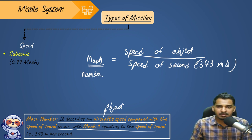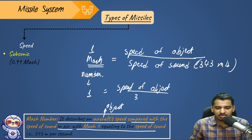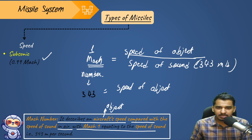If an object has Mach number 1, its speed equals the speed of sound — 343 m/s. So subsonic is classified as Mach number up to 0.99, meaning less than the speed of sound. That is why it is called subsonic.